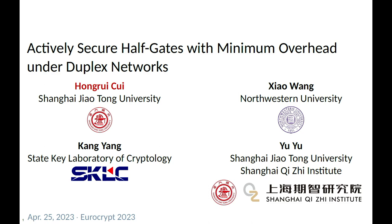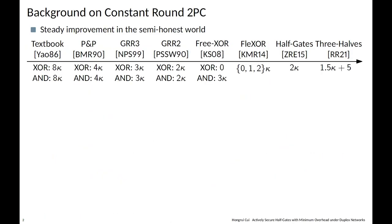Our second talk is 'Actively Secure Half Gates with Minimum Overhead under the Duplex Networks.' Ong Rui Q is giving the talk. Thanks for the introduction. This is a joint work with Jia Wang, Kang Yang, and Yu Yu. We'll begin with the background of this work.